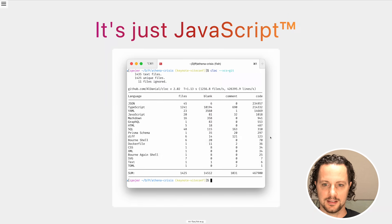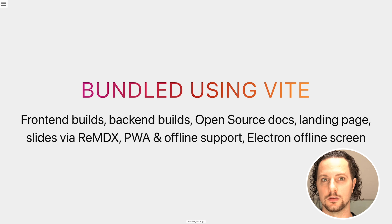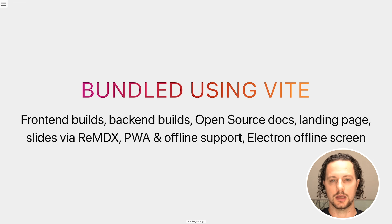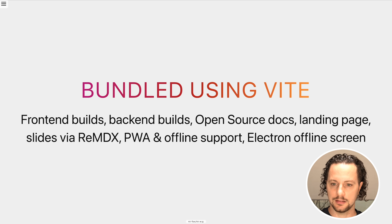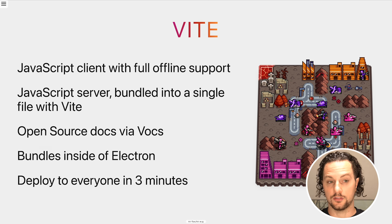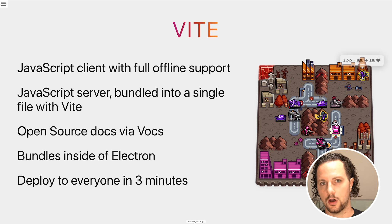How does any of this work? It's all just JavaScript — to be exact, it's about 214,000 lines of JavaScript, all handwritten first-party code. There are obviously a lot of third-party packages as well. But the interesting thing, if you're listening to this at ViteConf, is that it's all bundled using Vite: the front-end builds, the back-end builds, the open source docs, the landing page. The slides are using reMDX, which is a Vite plugin to build slide decks like this. It's using Vite plugin PWA for notifications and offline support, so you can play the game offline while you're in an airplane. And it also bundles the offline screen for the Electron app. End-to-end, that means there's a JavaScript client with full offline support and a JavaScript server bundled into a single file with Vite, then packaged using Docker and deployed on our servers.